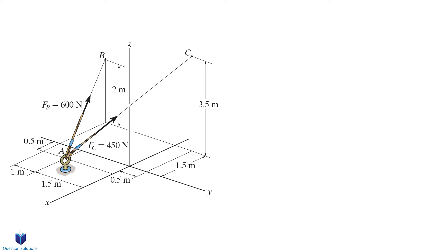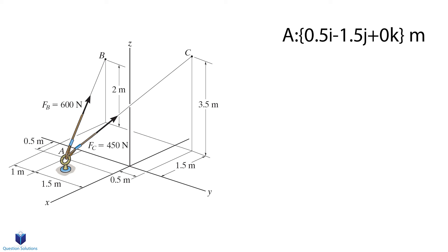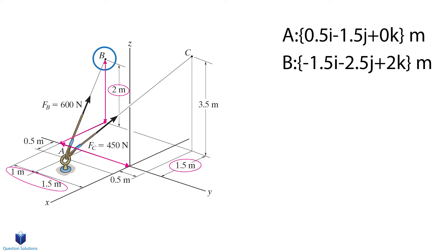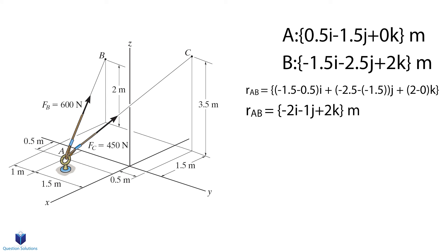The last method we will look at is when a force is shown to be along a rope or wire, or going from one point to another. To start with this example, we must first figure out where point A is with respect to the origin and write it in Cartesian vector notation. Point A is at 0.5i negative 1.5j plus 0k meters. Our j component is negative because point A is on the negative y-axis side. Now let's look at point B. We must write where point B is with respect to the origin. Point B is at negative 1.5i negative 2.5j plus 2k meters. We can now find the position vector denoted Rab, found by subtracting the corresponding coordinates. When we simplify, Rab is equal to negative 2i negative 1j plus 2k meters.